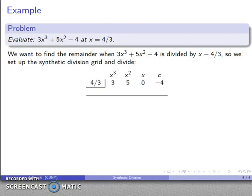So I'll set up my synthetic division grid. My divisor x minus 4 thirds, so my a value is going to be 4 thirds. Note that's the same as what I'm evaluating at. My coefficients, well, this is an x cubed polynomial, so I have my x cubed, x squared, x, and constant column. My coefficient of x cubed is 3, x squared coefficient is 5, x coefficient is nothing here, so that's going to be 0, and my constant term is going to be negative 4. So I'll set up my synthetic division grid, and I'll perform that division.